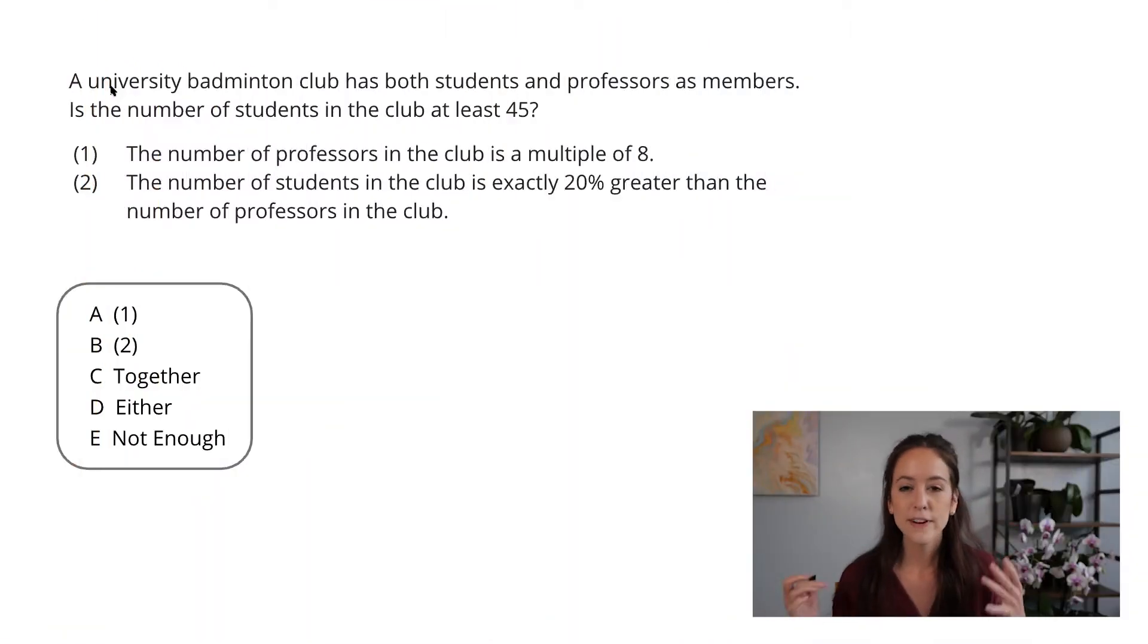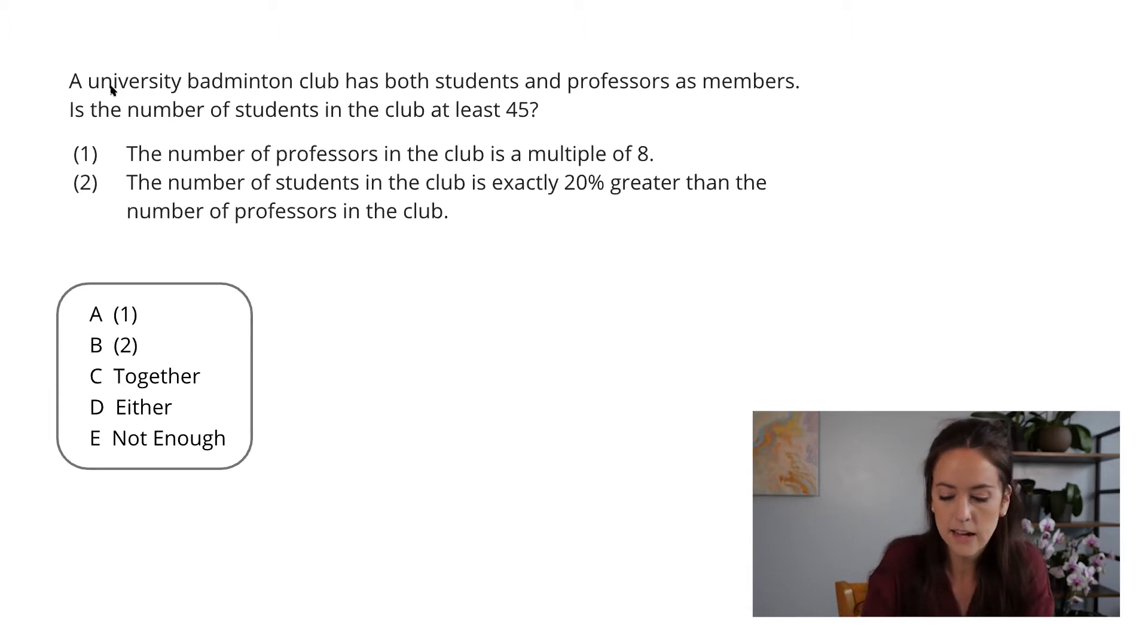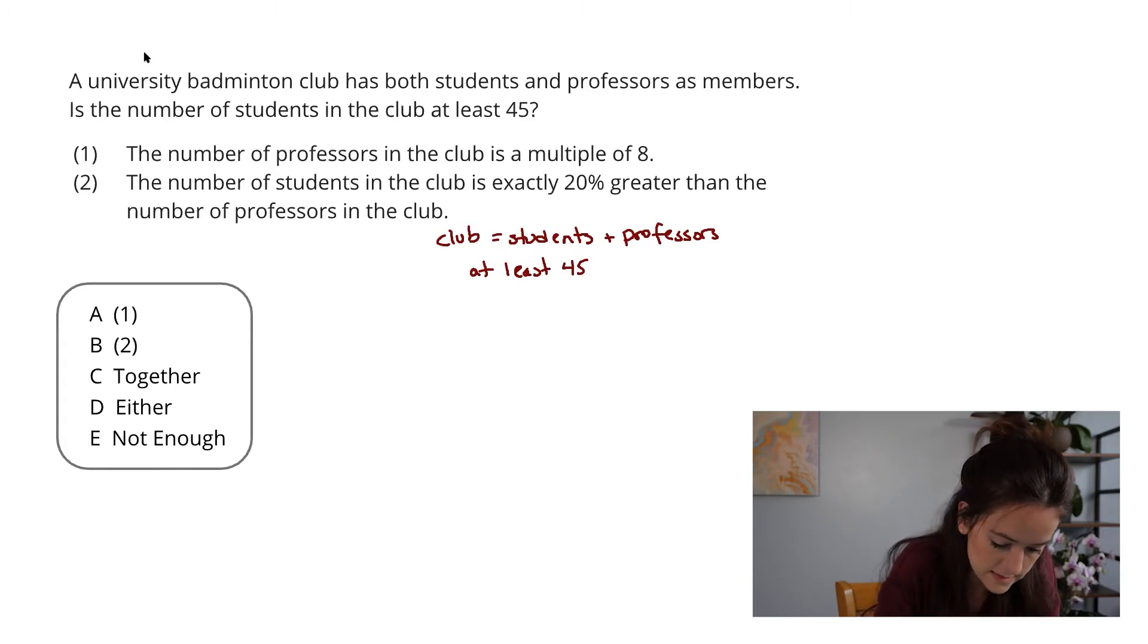All right, so the very first thing I want to do on a data sufficiency question, especially if it looks like it's going to be on the challenging side, which this one is, is to really understand what the question is asking. In this case, I am told that a university badminton club has both students and professors. I am asked if the number of students is at least 45. I just want to make sure that I have that written down, if there are at least 45 students.